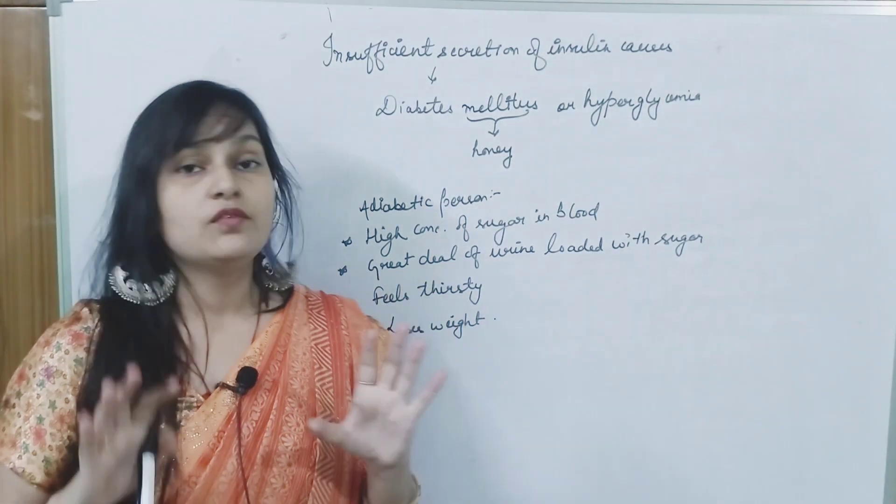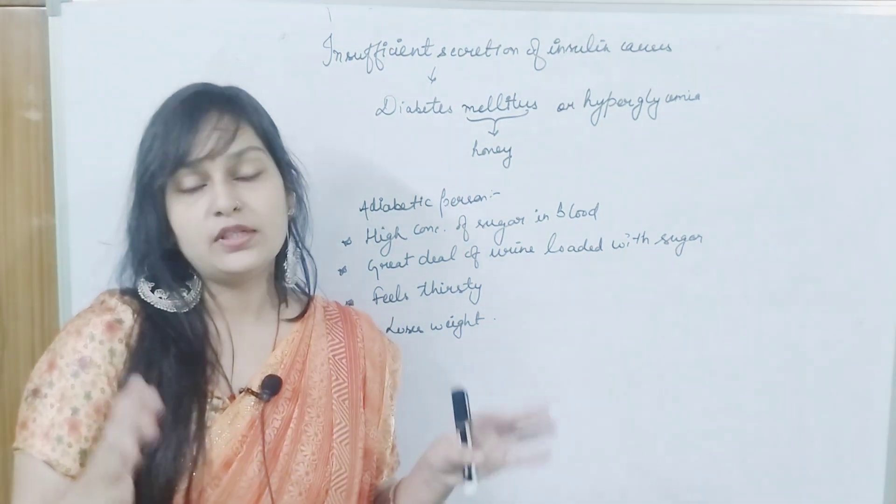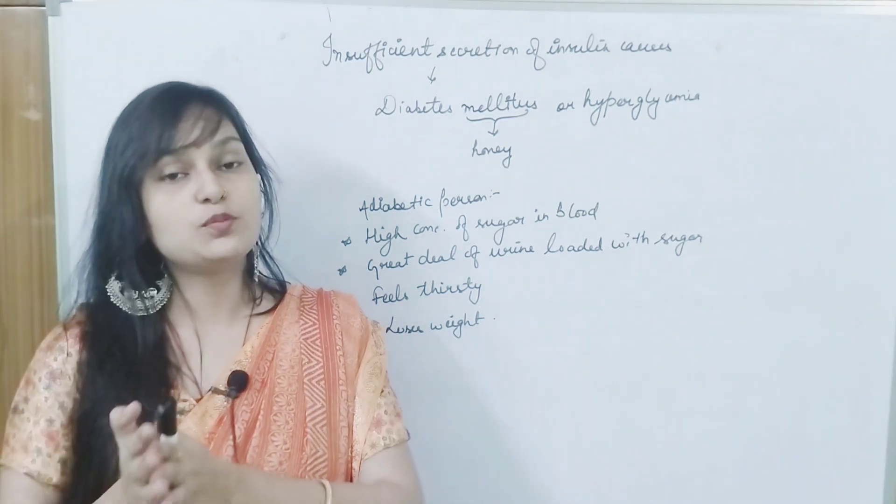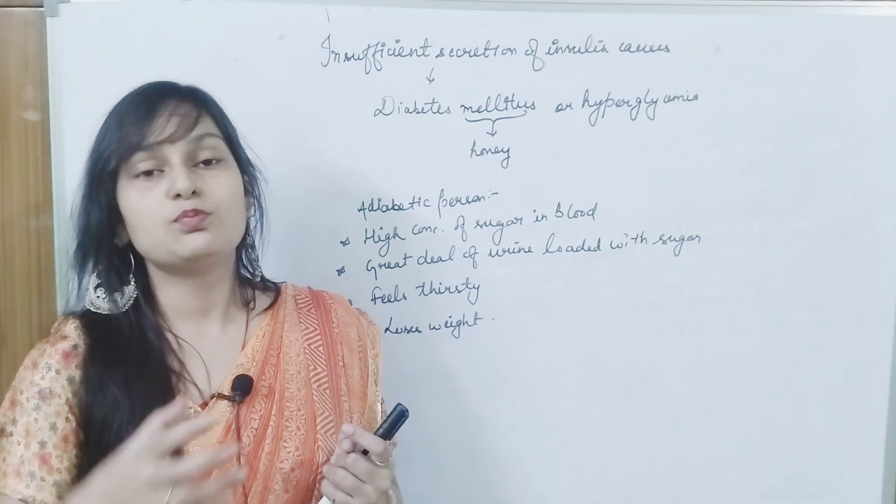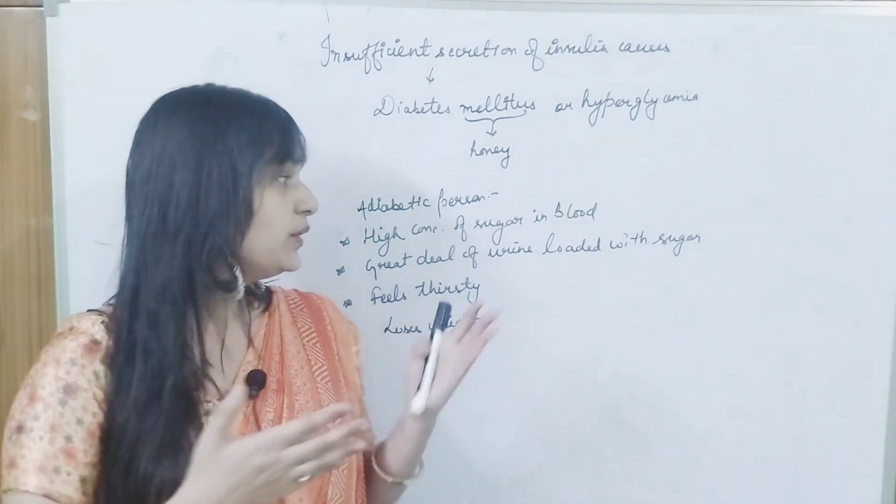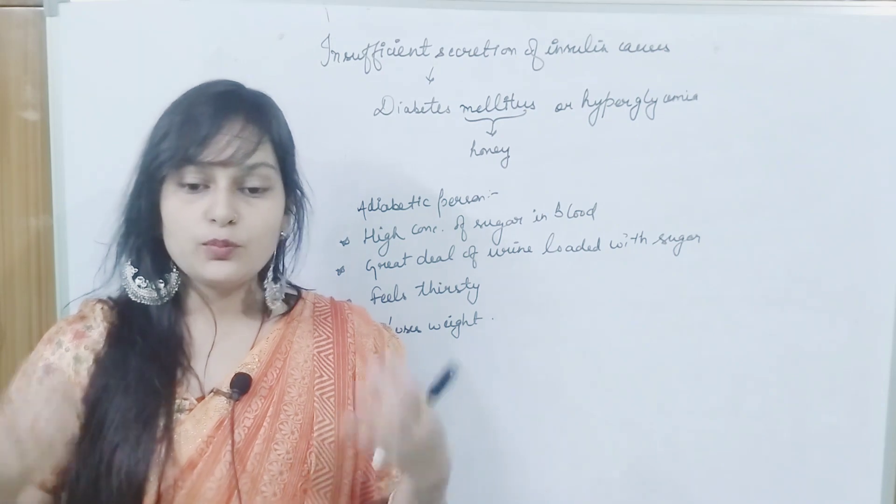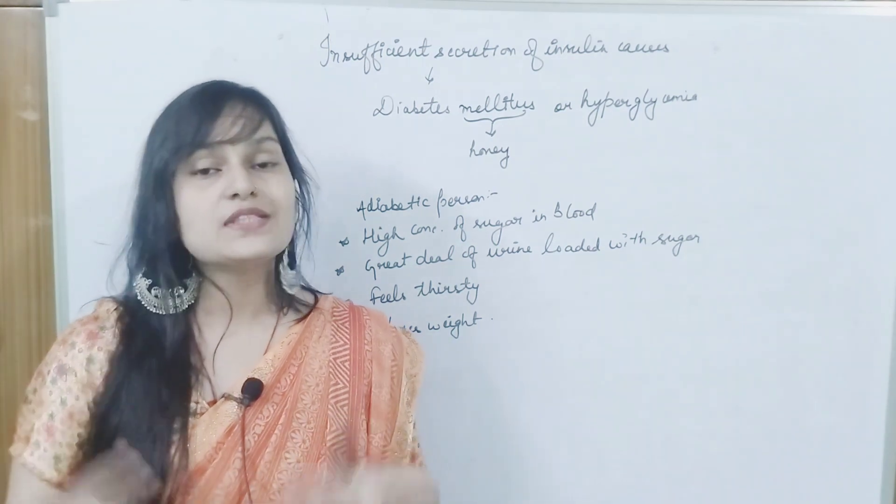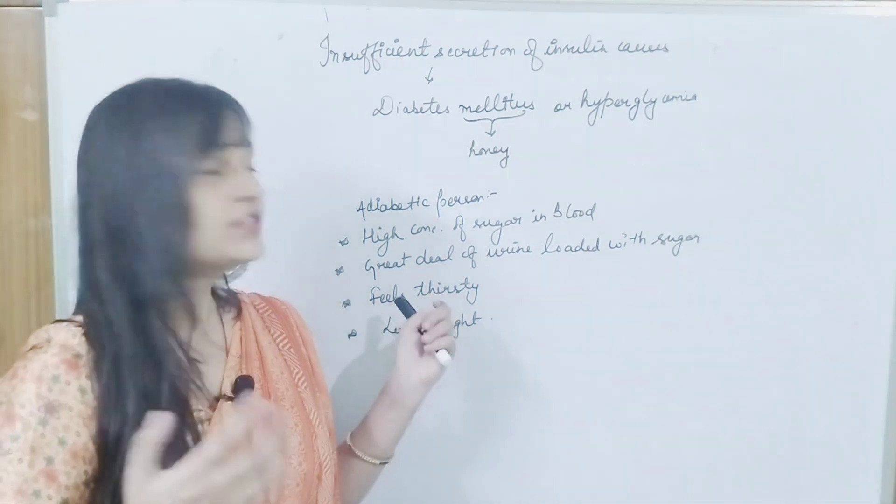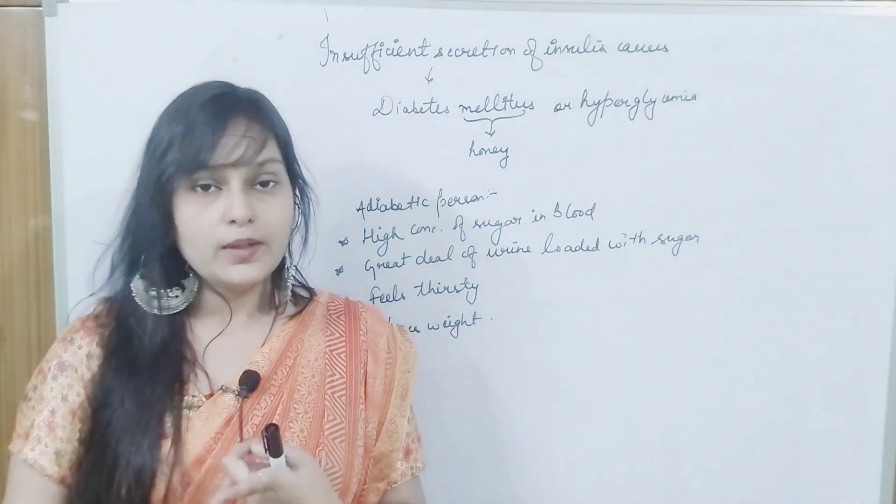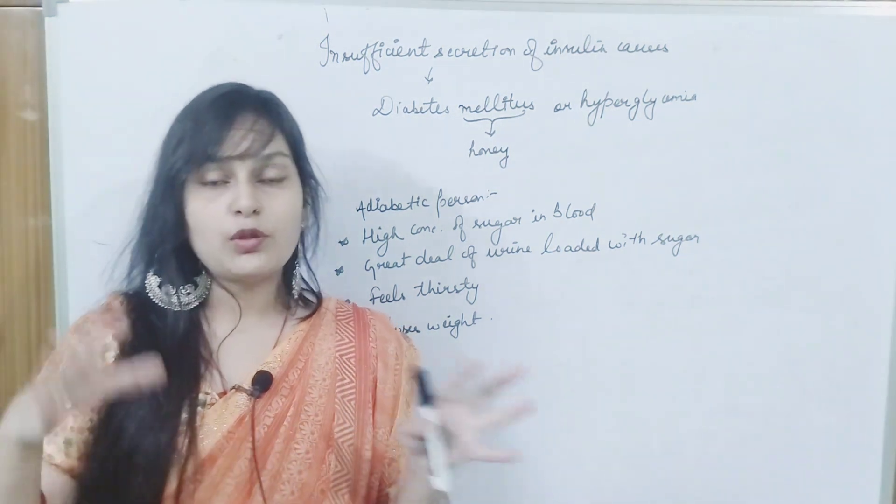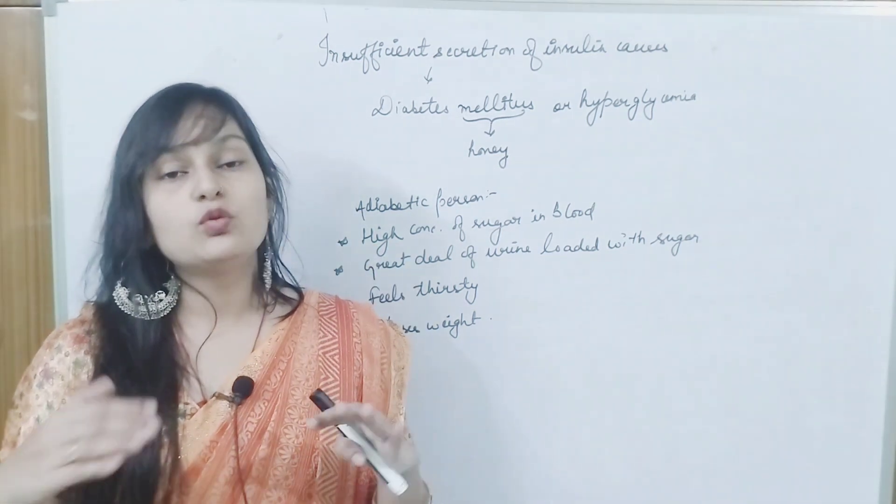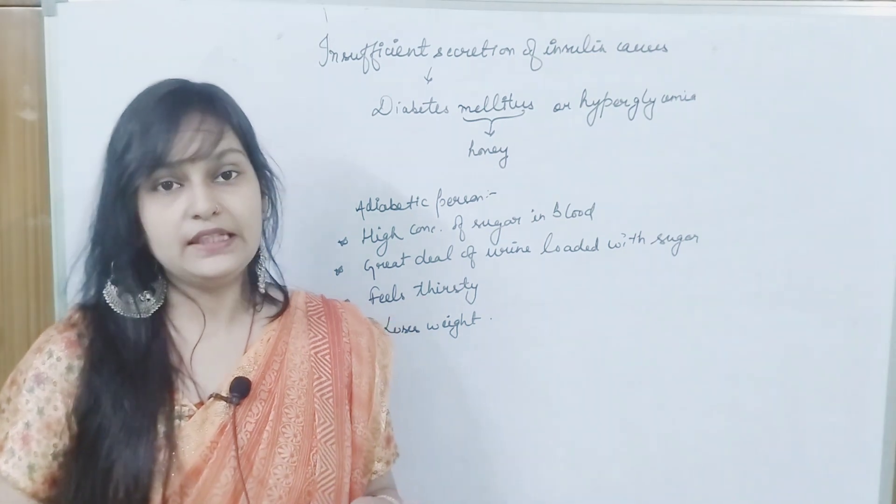High concentration of sugar in blood. Blood test. In blood test, if you can see that the amount of sugar is high, then what will happen? Glucose is produced and insulin is not produced. Second is great deal of urine loaded with sugar. If in urine the amount of sugar is high or glucose content, then the amount of glucose is high. Next is feel thirsty, frequent urination. If it is a lot of urination, when it is dehydrated, then the body will get dehydrated. If it is dehydrated, it will need water. So it will get more thirsty and loss of weight.